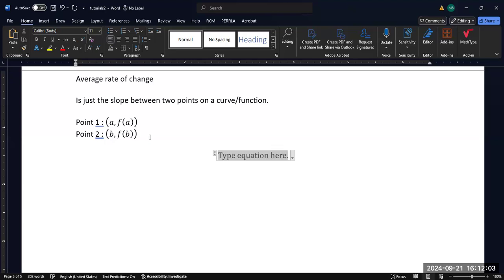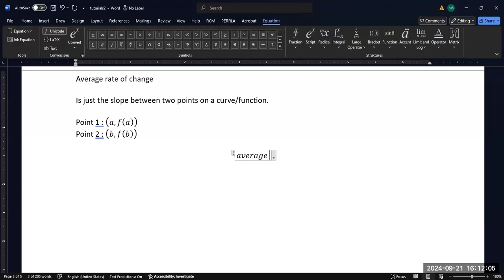So the formula for the average rate of change is, again, it's just the slope.